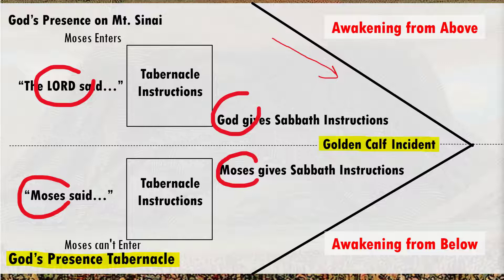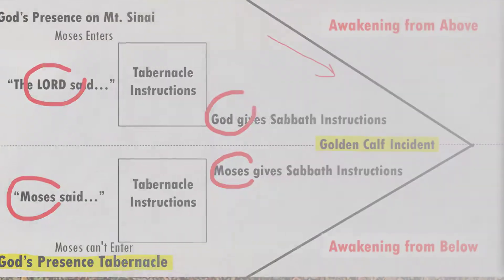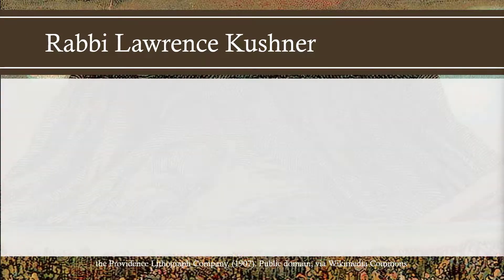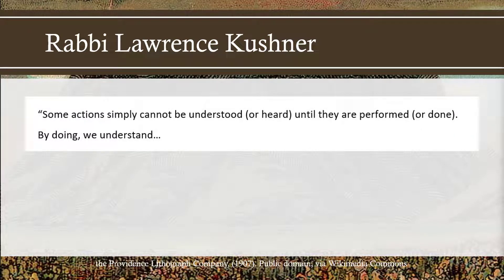I mentioned last week a book about Jewish spirituality — a delightful little book called Jewish Spirituality: A Brief Introduction for Christians by Rabbi Lawrence Kushner. It's a very easy read. He does cover the concept of revelation from above and below in that book. Here's the quote, having to do with the revelation from below, how we learn.